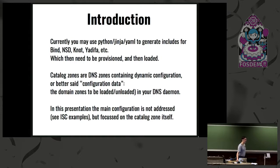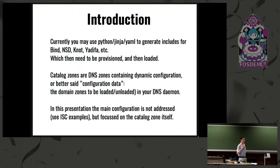Then you synchronize that configuration and reload it to be loaded. That needs a provisioning place — where you start your provisioning to those daemons out-of-band. Catalog zones contain the information that's variable in your configuration — basically the list of zones that you need to have loaded in your daemon. The daemon configuration itself is not addressed, but the catalog zone is.